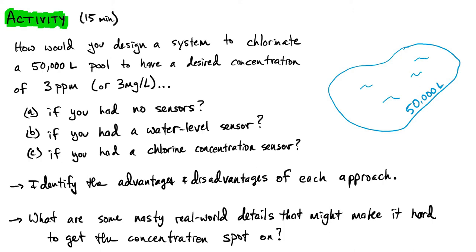A pool — a normal-sized pool — is 50,000 liters, which is the typical volume. Say you had to chlorinate this pool to three parts per million, which is essentially three milligrams of chlorine per liter. Consider three different scenarios: one in which you have no sensors, one in which you have only a water level sensor — which essentially gives you the volume of the pool — and one if you have a chlorine concentration sensor that gives you the parts per million or milligrams per liter of current chlorine level.